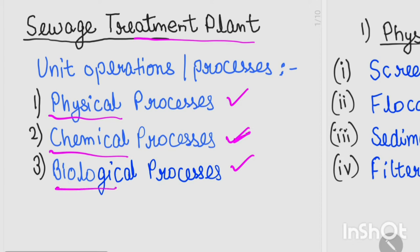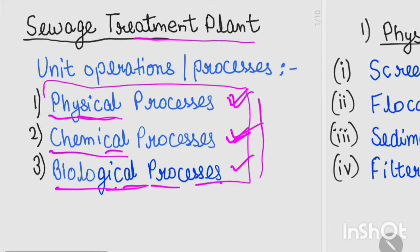In the biological process, microorganisms are used for sewage treatment. So in summary, physical processes use mechanical means, chemical processes use chemicals, and biological processes use microorganisms for sewage treatment.